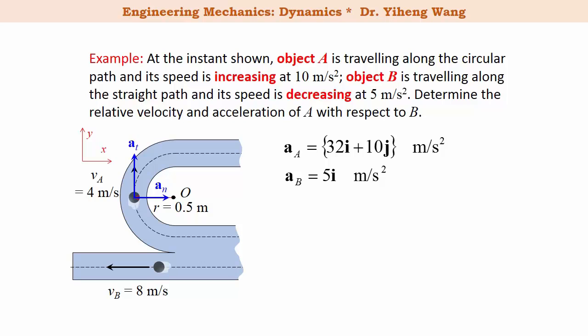Therefore, these two absolute accelerations are both written in vector form. We can apply the equation for relative acceleration. The acceleration of A relative to B equals to a_A minus a_B, again pay attention to the order of the subscripts. And if we do the Cartesian vector addition-subtraction, this equals to 27i plus 10j m per second squared, and that is the answer in Cartesian form, or we can also find the magnitude to be 28.8 m per second squared.